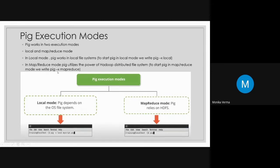In MapReduce mode, we will be taking data from HDFS and storing data into HDFS. It utilizes the power of Hadoop distributed file system. If you want to run in MapReduce mode, you first have to store your file from the local file system into HDFS, then only you can run the Pig script file in MapReduce mode. So there are two execution modes: local mode and MapReduce mode.